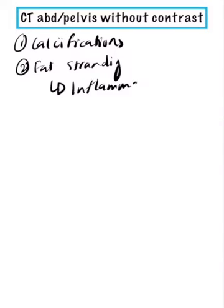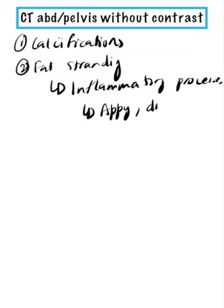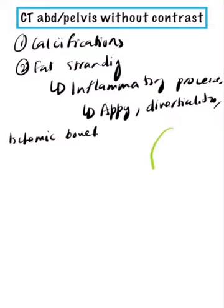And secondly, fat stranding is seen with inflammatory processes. This can be secondary to appendicitis, diverticulitis, or ischemic bowel. Anything that causes inflammation will cause the fat around it and the mesentery or the omentum to show up on the CT scan.